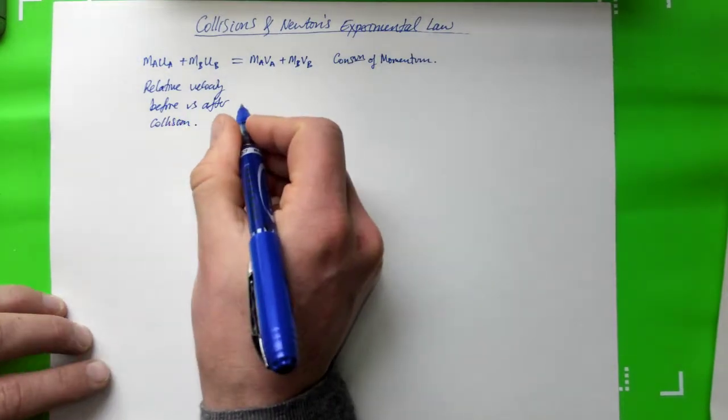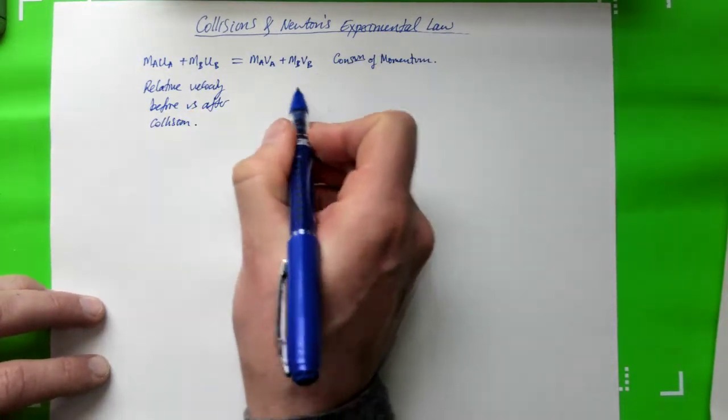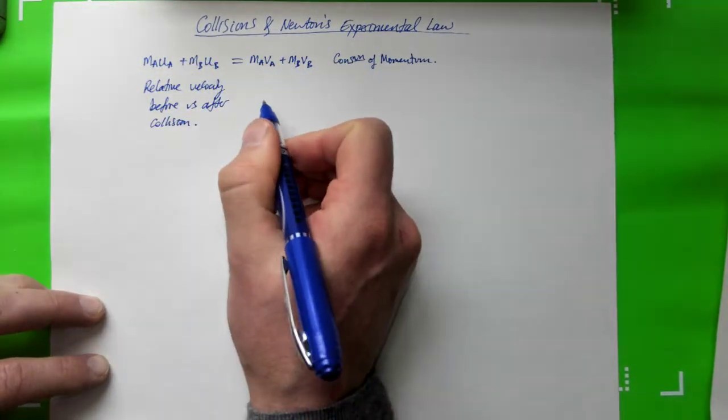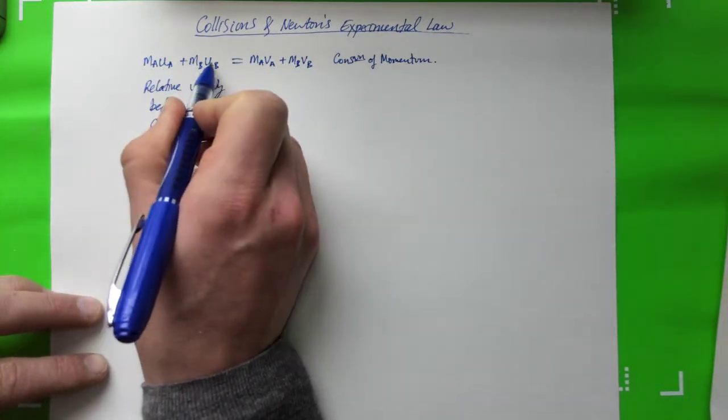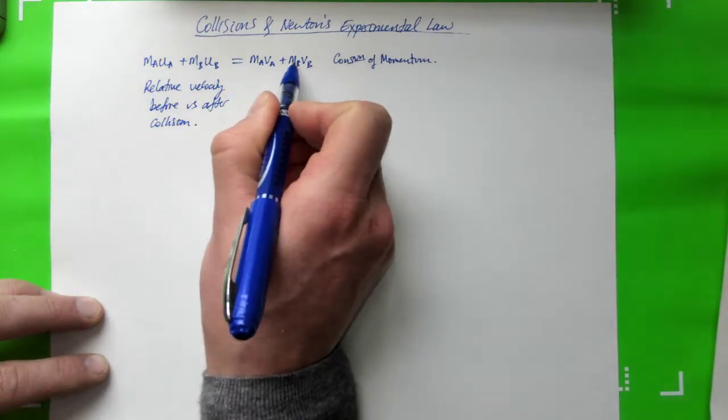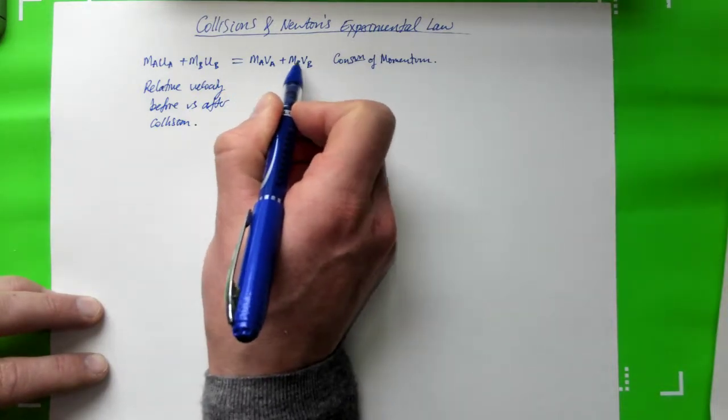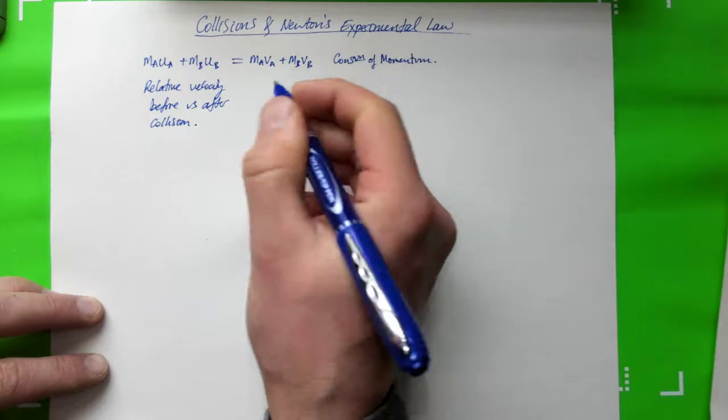He found that by writing down this relationship he could get a second equation that he combined with the conservation of momentum in order to solve for the unknowns. If you know the masses of the two objects and you know their speeds before the collision, you cannot solve for their speeds after in most cases, because there are two unknowns, only one equation, so we need an additional law.